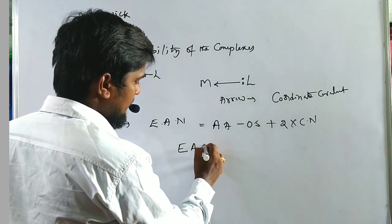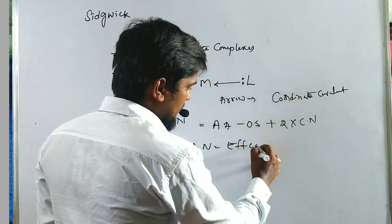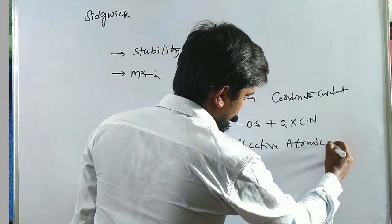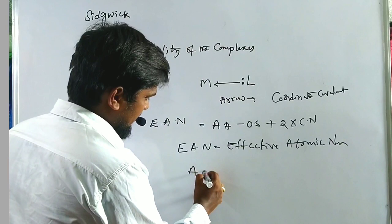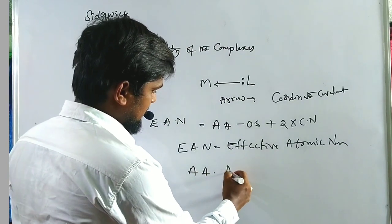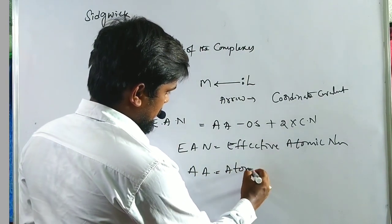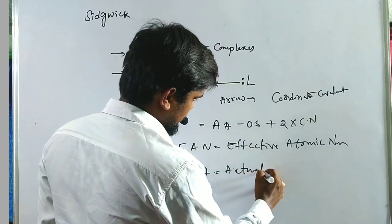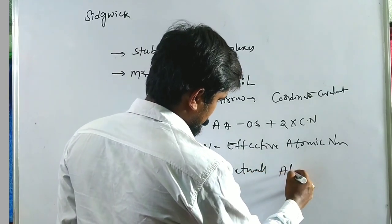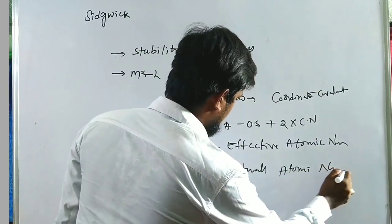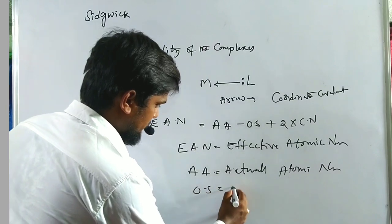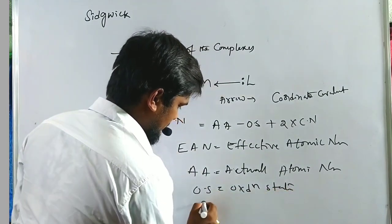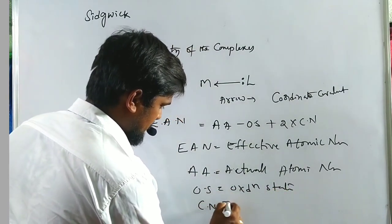In the EAN formula: EAN is the effective atomic number, AAN is the actual atomic number, OS is the oxidation state, and CN is the coordination number.